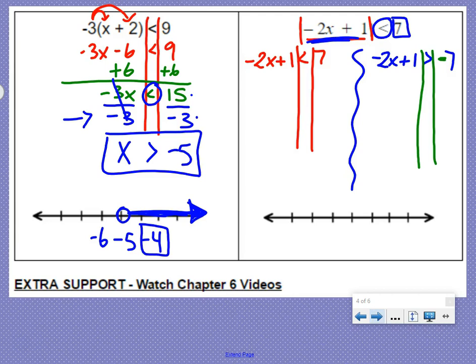Solve both of them. Undo plus 1 with minus 1. We get negative 2x is less than 6. Divide both sides by negative 2. And we get x, negative 3. We divide it by a negative, which means we have to flip our inequality. So we have x is greater than negative 3.